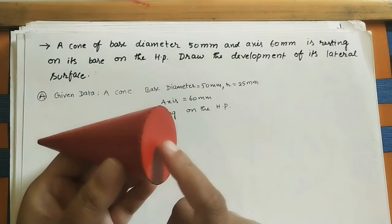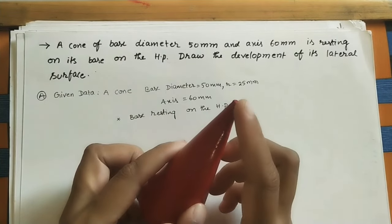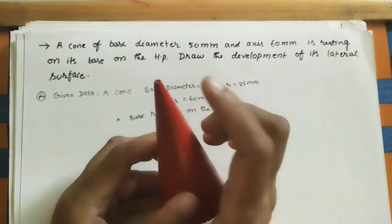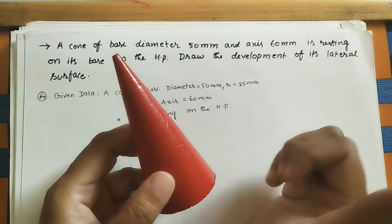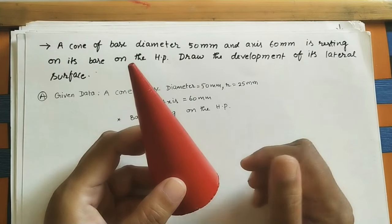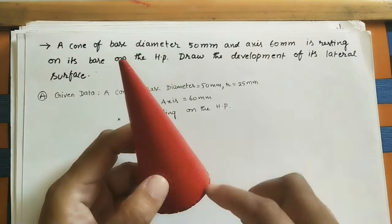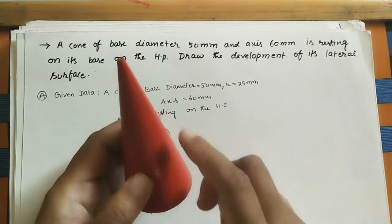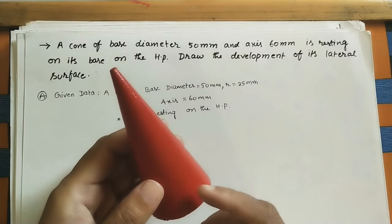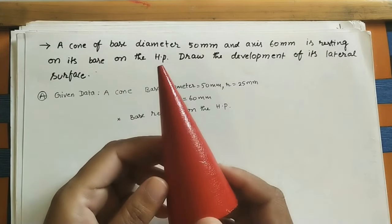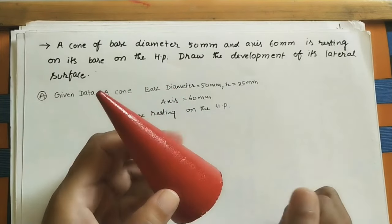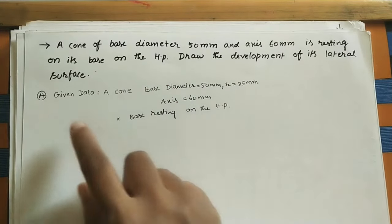We call this the base, and this point is called the apex. The base and apex are connected with the help of slant edges, which we call generators. There will be an infinite number of generators joining the apex to the base — these look like slant edges.